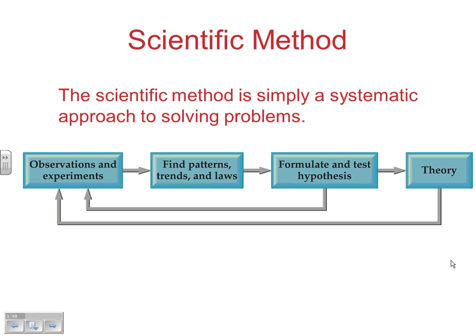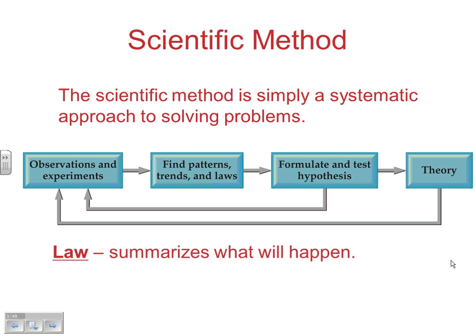From there, you come up with ways of testing that hypothesis. If your hypothesis is upheld, you end up with a conclusion, which comes in one of two forms: either a theory or a law. A law summarizes what will happen — law of conservation of mass, law of conservation of energy. A theory explains why it's going to occur — kinetic molecular theory, collision theory.